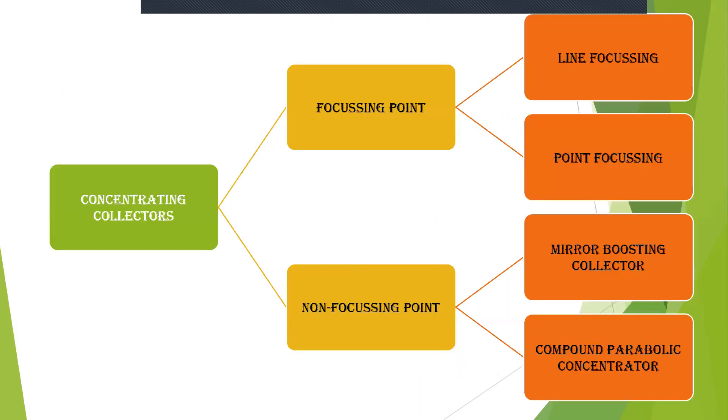Now, let us move into the classification of concentrating collectors. Concentrating collectors is divided as focusing and non-focusing type collectors. Now this focusing type is divided into line and point focusing and non-focusing is mirror boosting and compound parabolic concentrator.